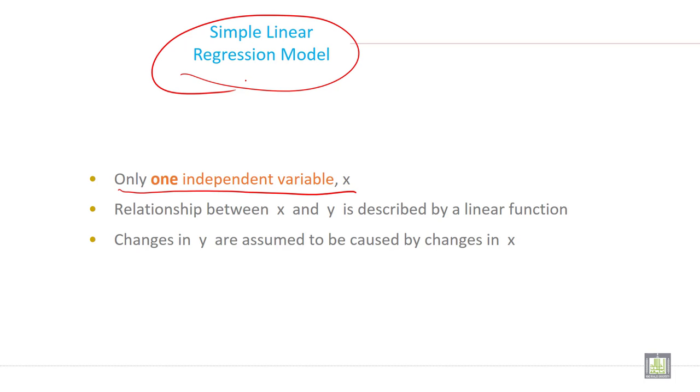Relationship between x and y is described by a linear function and changes in y are assumed to be caused by changes in x. Then it is called simple linear regression model.